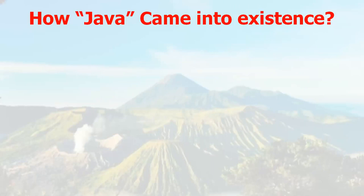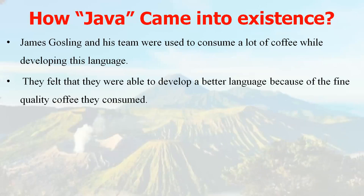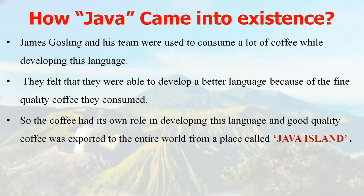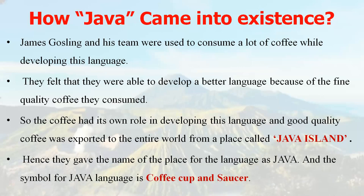Now I'll explain about how Java came into existence. James Gosling and his team used to consume a lot of coffee while developing this language. They felt that they were able to develop a better language because of the fine quality coffee they consumed. The coffee had its own role in developing this language, and good quality coffee was exported to the entire world from a place called Java Island. Hence they gave the name of that place to the language as Java, and the symbol for Java language is a coffee cup and saucer.